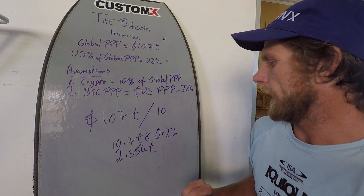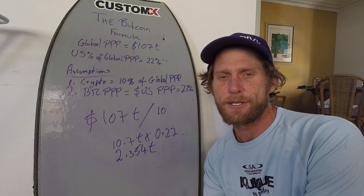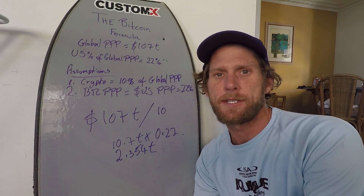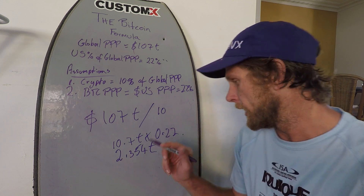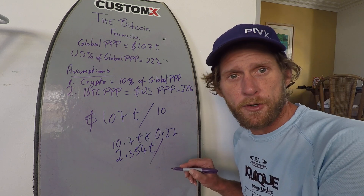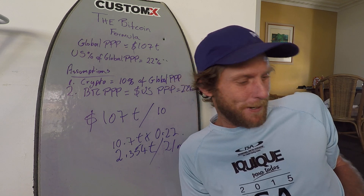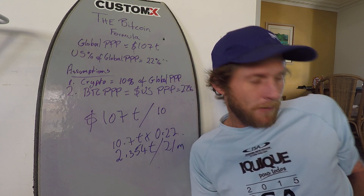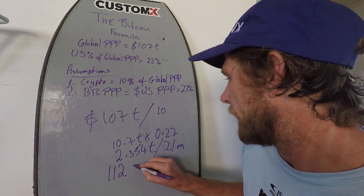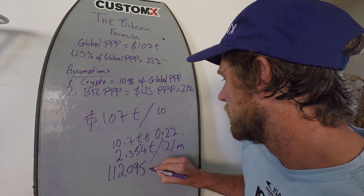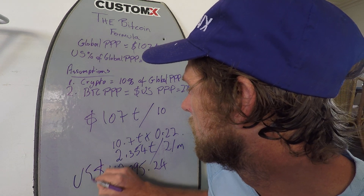2.354 trillion. How do we get our actual per-Bitcoin price from that? It's very easy with Bitcoin because we know that there's a limited eventual circulating supply of 21 million. So to get our end figure, it's as simple as dividing 2.354 trillion by 21 million. I'll just read it off my Excel spreadsheet — the end result is $112,095.24 US dollars.